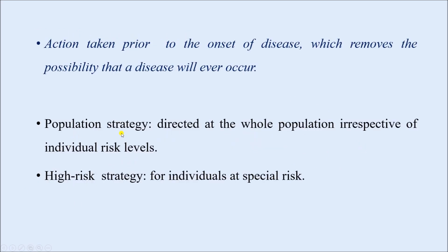Primary prevention has two main strategies. The first is the population strategy, which is directed at the whole population irrespective of individual risk levels. For example, if we can control the intake of fatty food in a given population, we will also see a decline in the incidence or prevalence of hypertension. Here we are basically talking about the reduction of oil or fatty food intake at the population level, not at the individual level.